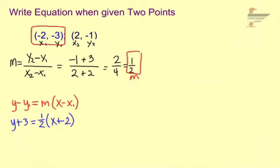So now we have the equation in point-slope form. Now I had mentioned that we want this in slope-intercept form and standard form for our two final answers. So to get this to slope-intercept form, we're going to solve for the y. We'll start by distributing this 1 half.